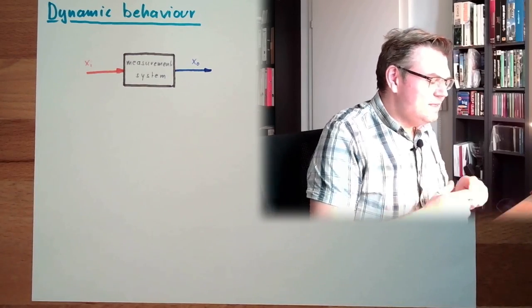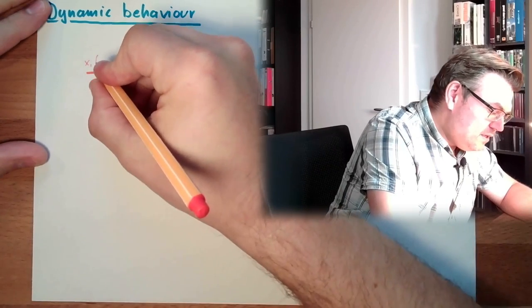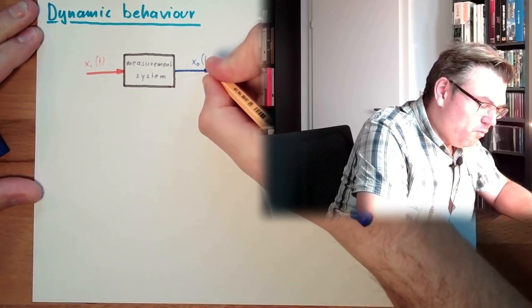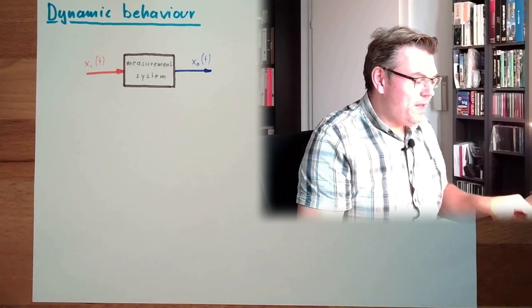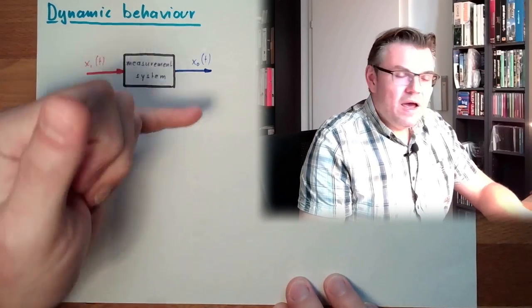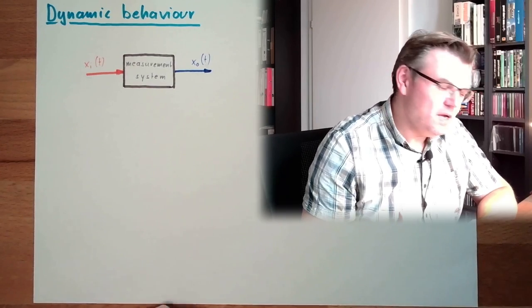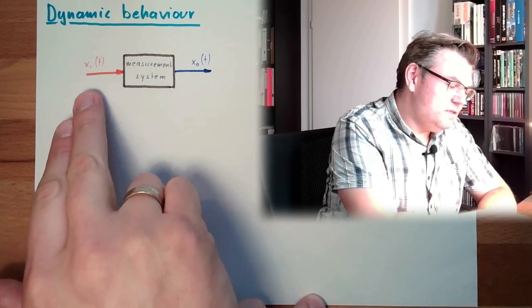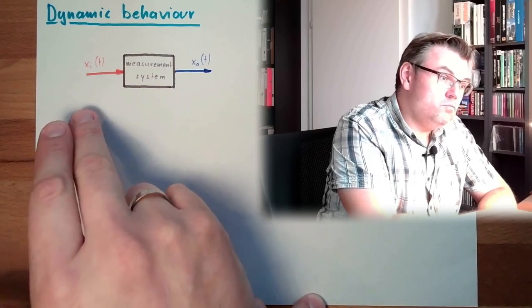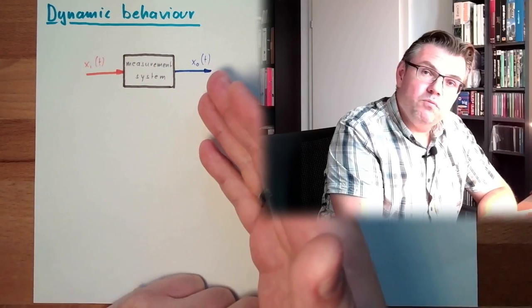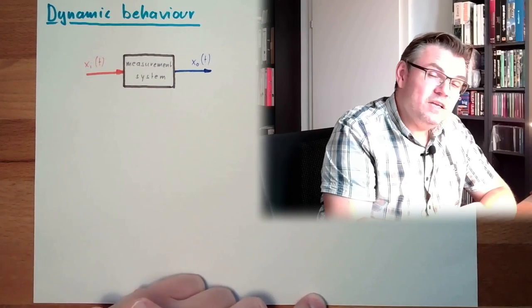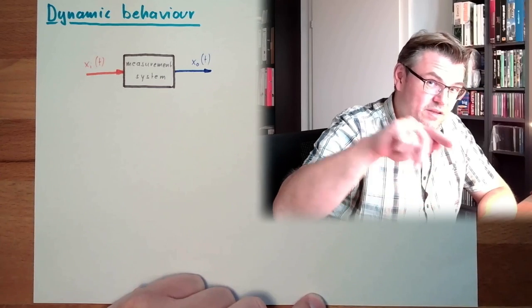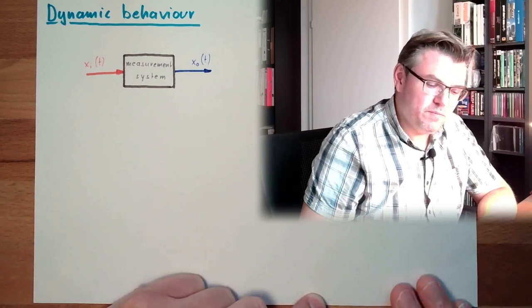Dynamic now means that this XI is changing over time, it's XI from T. So also the output XO is changing over time. Now it depends how fast this input is changing and how fast our measurement system can react on this change. Is the output dynamically different from the input or not? If this change is rather slow for the measurement system, then the output will be able to follow the change. If the input is changing rather fast, then the output will not follow. So we will not stay on this characteristic curve. We will have difference from it, dynamic difference.